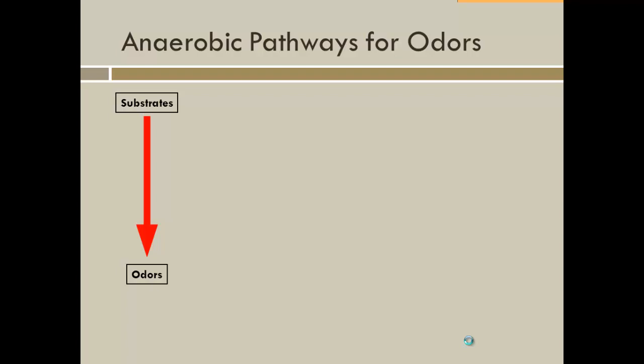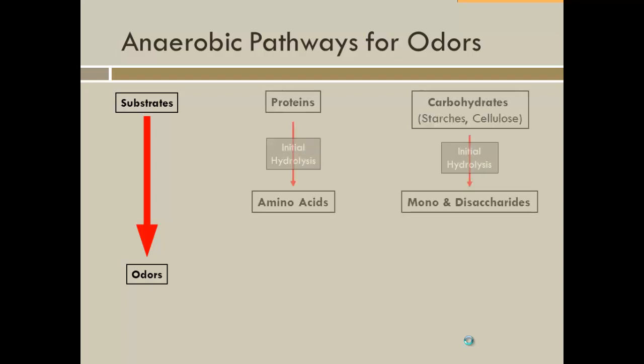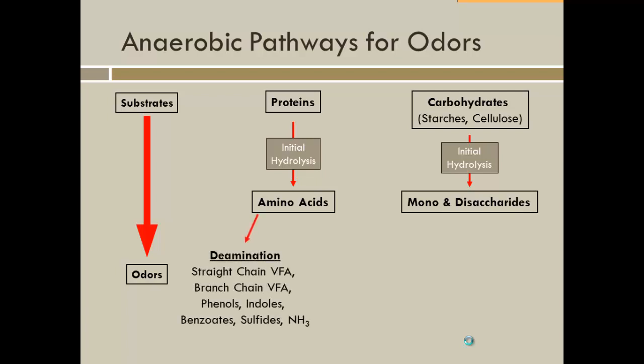Looking at the different anaerobic pathways — in an anaerobic environment with no oxygen, you can look at the composition of proteins or carbohydrates in the manure. Through an initial hydrolysis step, those proteins and carbohydrates are broken into simpler molecules like amino acids and simple sugars. The amino acids can go through two different kinds of further fermentation, ending up with a whole bunch of different odor compounds: volatile fatty acids, phenols, indoles, sulfides, diamines like putrescine and cadaverine. If you see more of these protein fermentation products, you can say there seems to be excess protein coming through the animal.